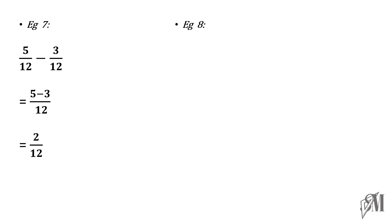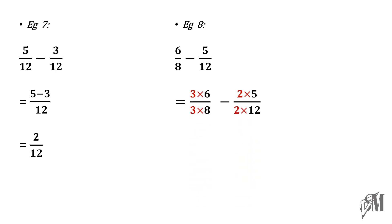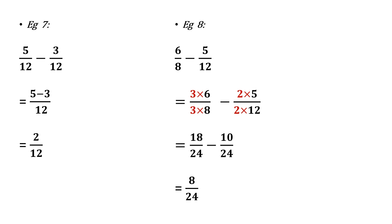Look at this example: 6 over 8 minus 5 over 12. Here, 8 and 12 are different denominators, so you have to equate the denominator. The LCM of 8 and 12 is 24 — we have already worked that out. You convert both denominators to 24 by multiplying the first fraction by 3 and the second fraction by 2. You get 18 over 24 minus 10 over 24, where the final answer is 8 over 24. This is how you do subtraction of fractions when the denominators are equal and when they are not equal.